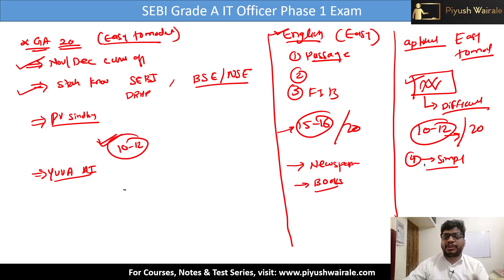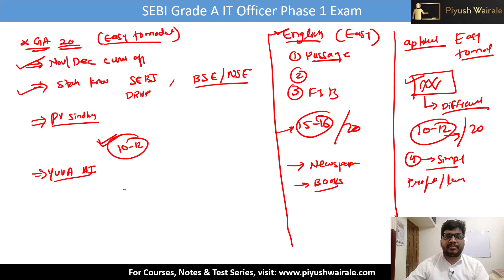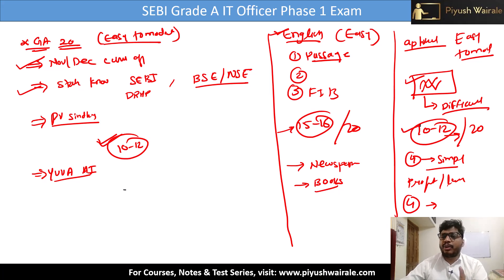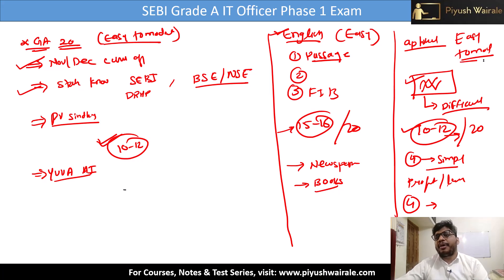There were a few questions based on profit and loss — simple questions. There were also four questions based on finding the wrong number in a series, out of which two were easy and two were difficult. Overall, 10 to 12 questions can be easily attempted from the aptitude part. Easy to moderate is the overall rating for aptitude.